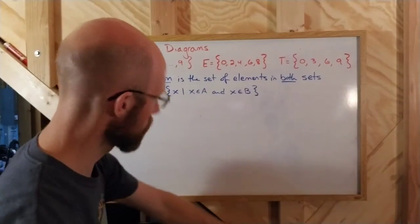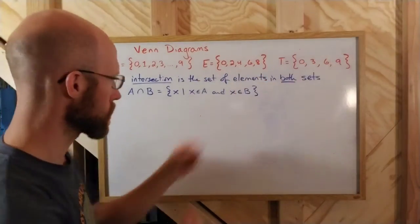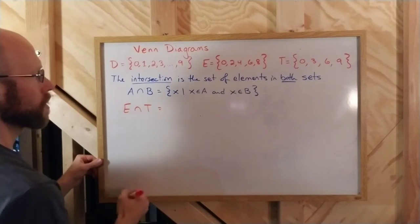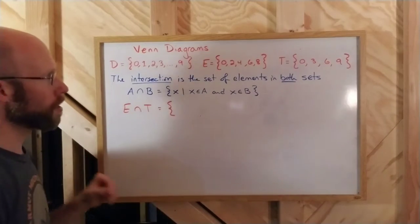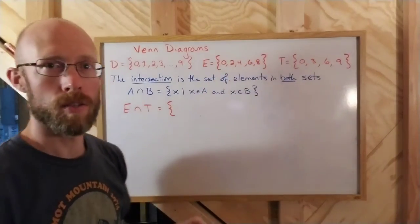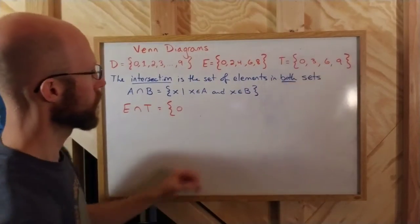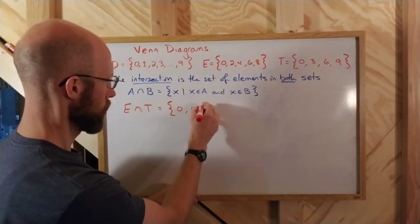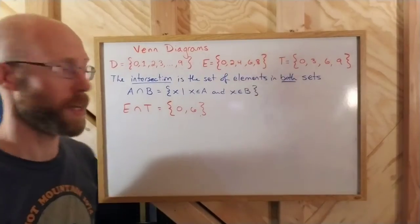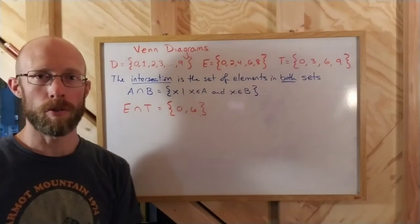In our example here with D, E, and T, I could find the intersection of E and T. So E intersect T would be all elements that are in both E and in T. And so in this case, it would be the number 0, because that's in both, and the number 6, because that's in both. And there are no other elements, because there are no other elements in both. So the intersection is all of the elements in both sets.